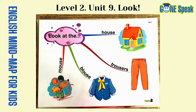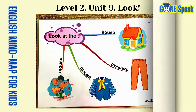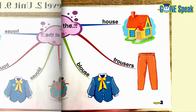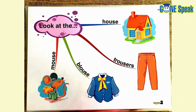Welcome to Gonspeak. This is a program of English MyMap for Kids. Level 2, Unit 9. Look. Let's practice sentences below.